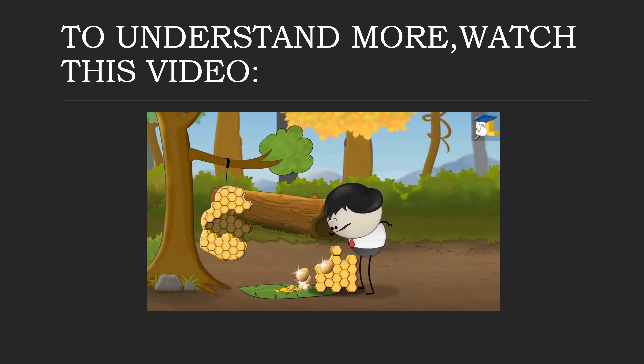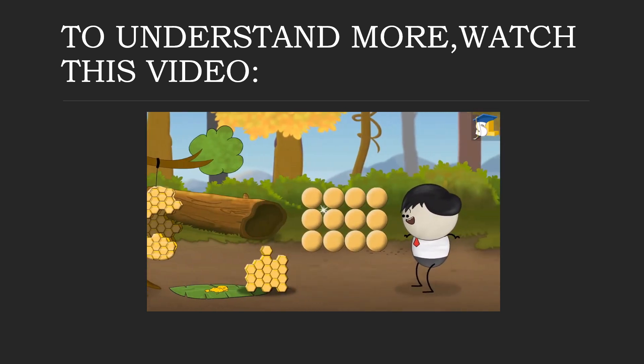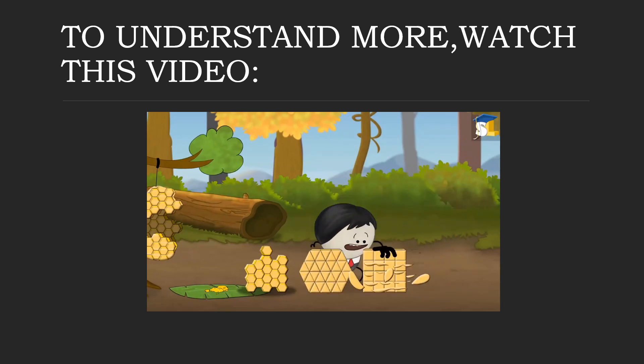Now, if each cell of the honeycomb would be a circle, then there would be a lot of gaps or wasted space between cells. So, why didn't honeybees make triangular or square cells?